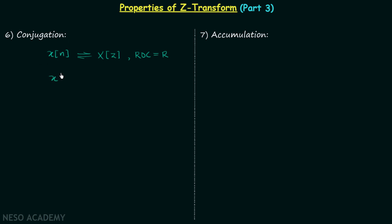Now we will perform the conjugation operation on signal Xn, which gives us a new signal X-conjugate(n). This new signal will have a new Z-transform equal to the conjugate of the old Z-transform with Z-conjugate in place of Z, and the region of convergence will remain the same. This is the conjugation property of the Z-transform, and now we will prove it.